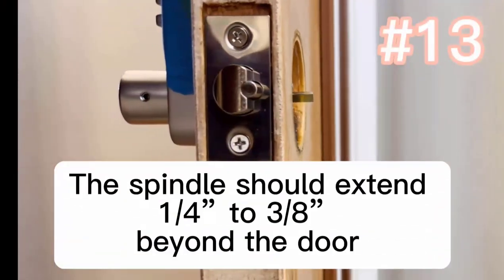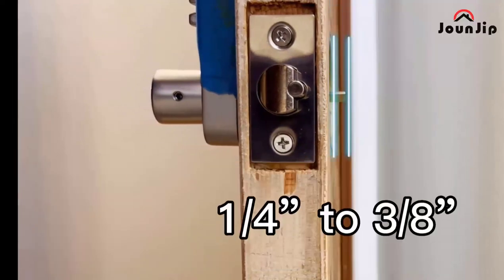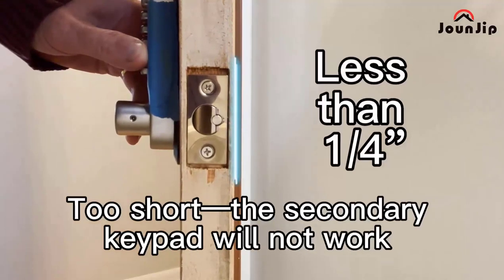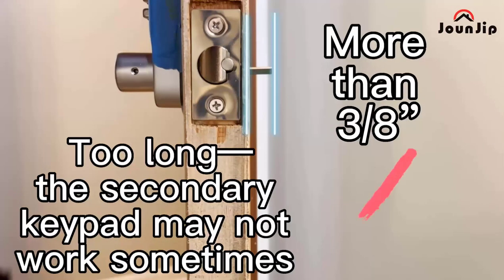Number thirteen: the spindle should extend one quarter and three eighths inch beyond the door, like so. If it's too short, the secondary keypad will not work. If it's too long, the secondary keypad may get jammed sometimes.